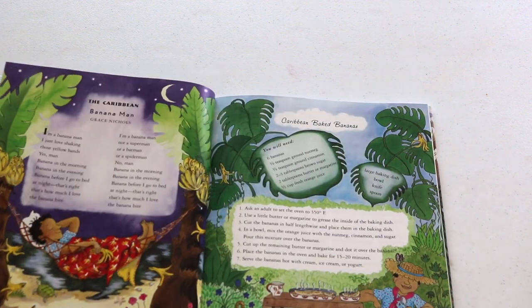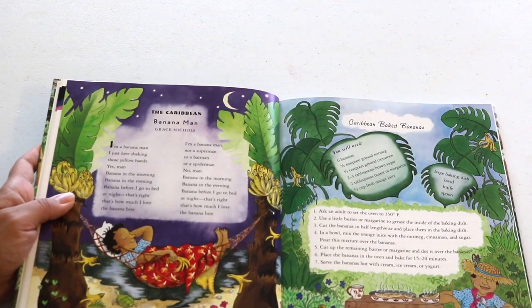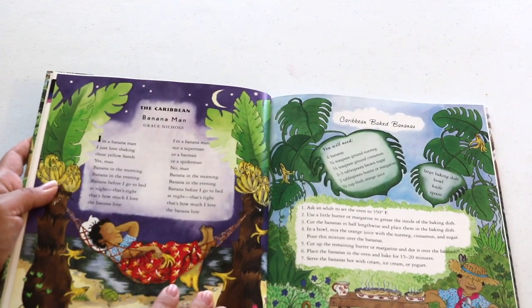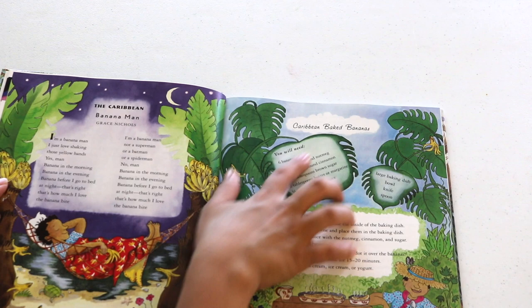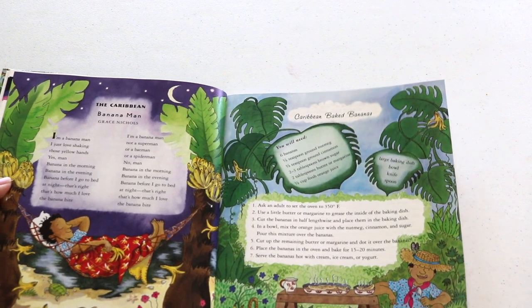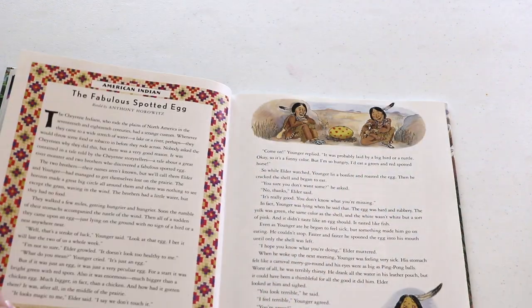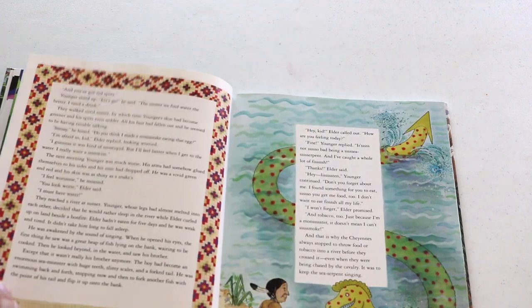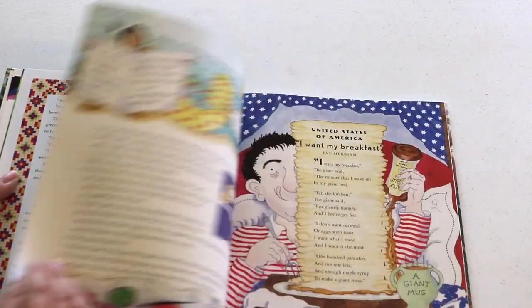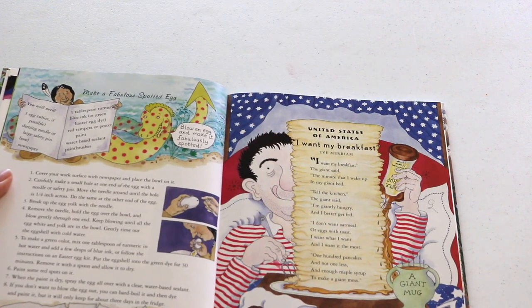This will be one of the resources that we use this year for our world geography and cultural studies, which is going to be mainly around the seven world continents. I like that this is something that again we can work on together, so I can involve my toddler, my kindergartner, and my first grader in all of the crafts or recipes.